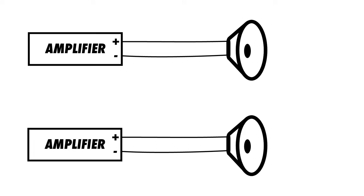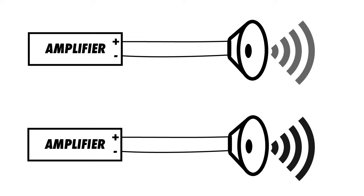Some speakers are more efficient than others. If two identical amplifiers provided 100 watts of power to two different speakers, one speaker may still be louder than the other depending on the sensitivity of each speaker. The sensitivity of a speaker describes the sound pressure level that can be expected at a given power input.